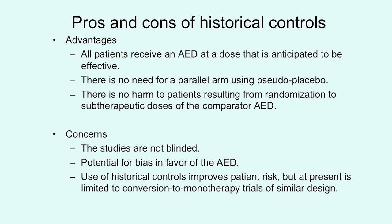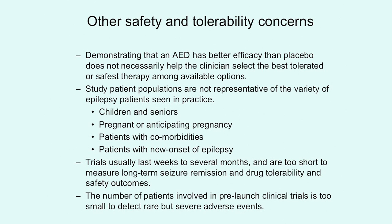There are pros and cons of historical controls, and studies have already been done using these for newer agents. The pros are that all patients receive an anti-epileptic drug at a dose anticipated to be therapeutic. But the concern is that there are potential biases and the study is not blinded to the investigator or to the patient. Additionally, proving that a drug is better than placebo doesn't necessarily help us select the best or safest drug among available choices.